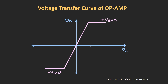We had seen the voltage transfer curve of this op-amp, and we had seen that even if we apply a small input voltage, the output will get saturated either towards the positive or the negative saturation voltages. For example, if the saturation voltage is 10V and the open-loop gain is 10 to the power 6, this op-amp will get saturated at just 10uV of differential input voltage.